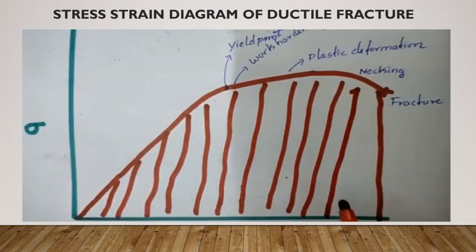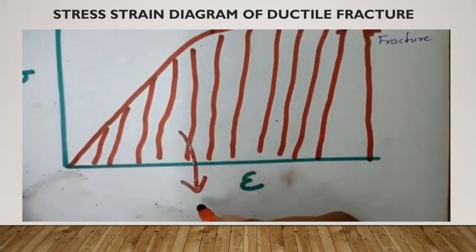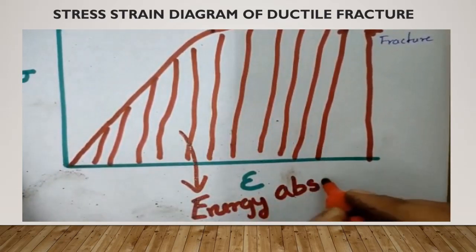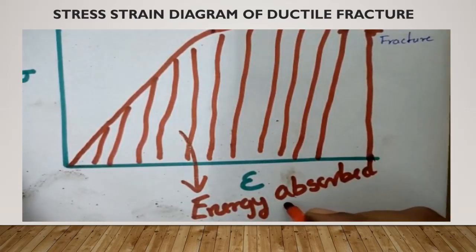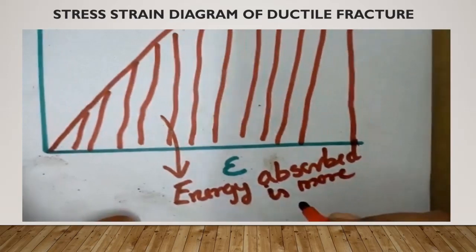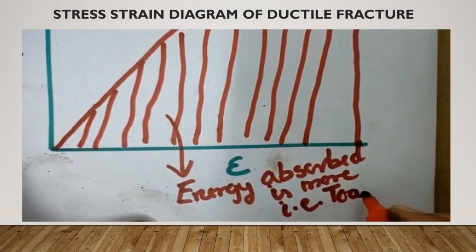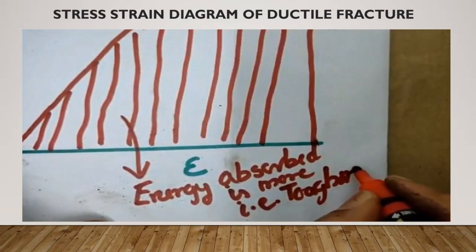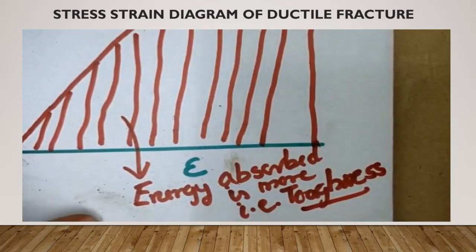The area under the stress-strain diagram gives the energy absorbed by the material. In the ductile case, the energy absorbed is more when compared to a brittle material, because here you have both the elastic part as well as the plastic part. This is indirectly called the toughness of the material — the area under the stress-strain curve is called toughness.